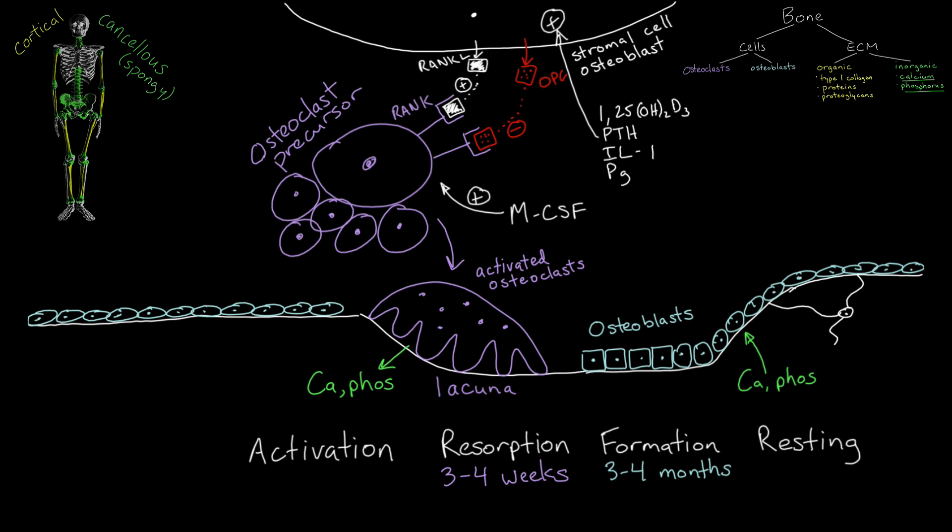As they synthesize bone, the osteoblasts become trapped in the matrix and form mechanoreceptors called osteocytes. These osteocytes are connected in a framework and, in response to damage or stress, release substances which influence bone remodeling.